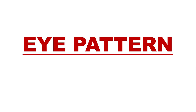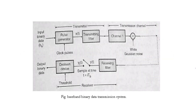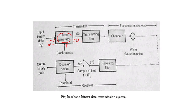Our topic is eye pattern. Recalling the basic baseband binary data transmission block diagram, the first block is a pulse generator. The input is binary data — say 1010 — and proper clock pulses are given so that a proper pulse waveform, either polar or unipolar, is formed to represent that binary data, which is then filtered and given to the channel.